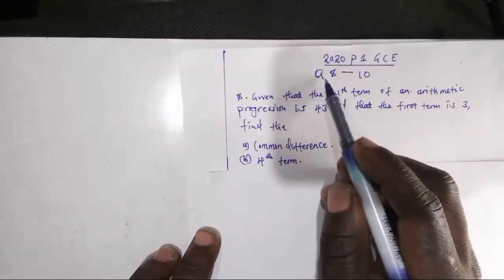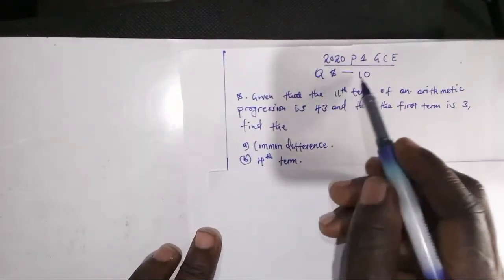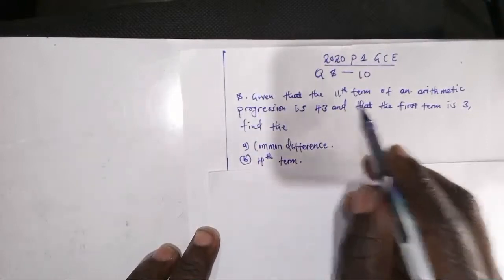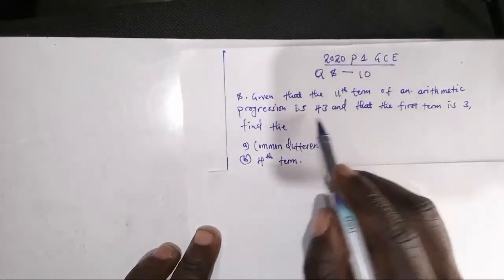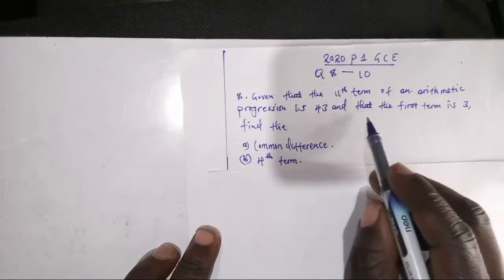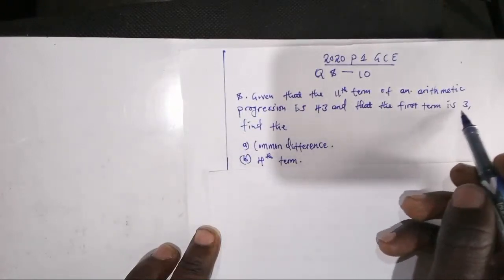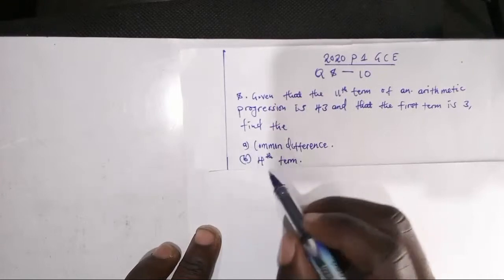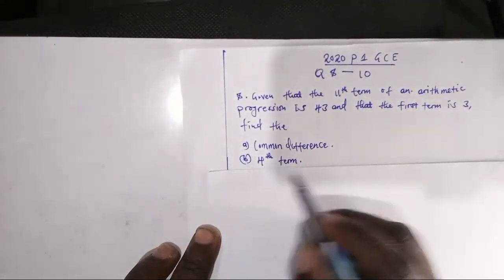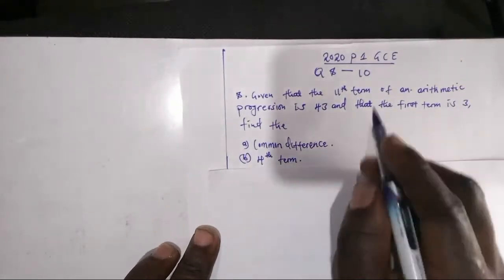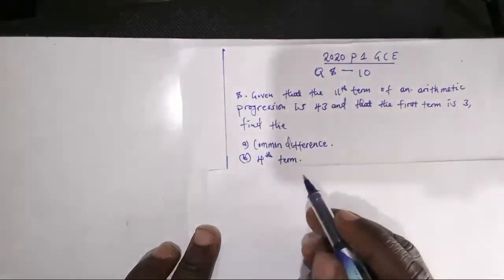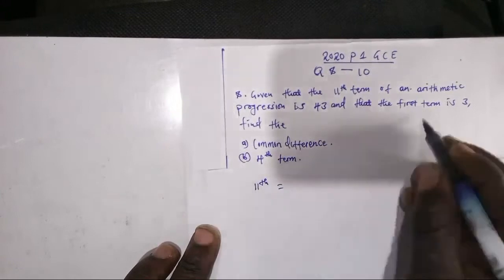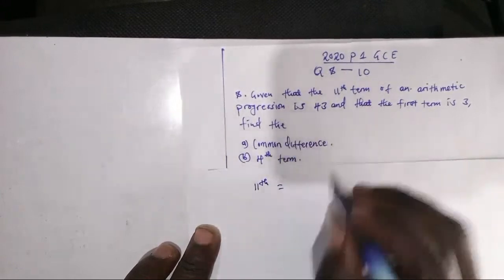We'll be answering from question 8 to question 10. For question 8, given that the 11th term of an arithmetic progression is 43, and that the first term is 3, find the common difference and the 4th term. So we have to start by analyzing this question. We have the 11th term which equals 43.